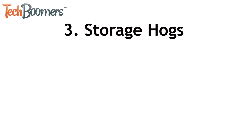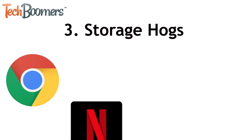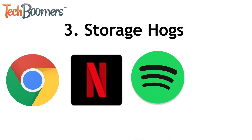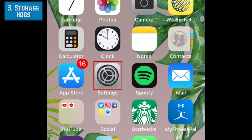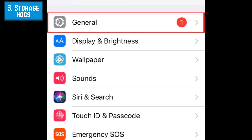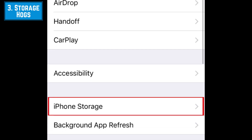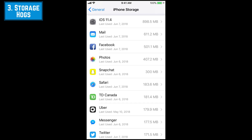The third type of app you should delete are apps that hog your device's storage space. Apps that commonly take up the most storage are extra web browsers like Google Chrome, media streaming apps like Netflix or Spotify, and gaming apps like PUBG. You can see which apps take up the most storage space in your iPhone settings. Open Settings and select General, then tap iPhone Storage. Scroll down to see a list of apps that use the most storage on your device, in order from most to least.